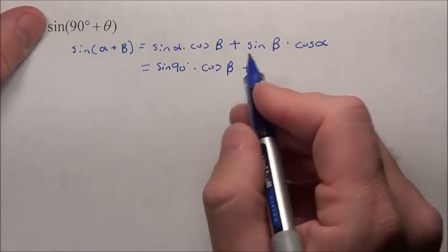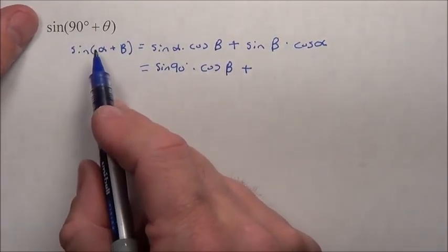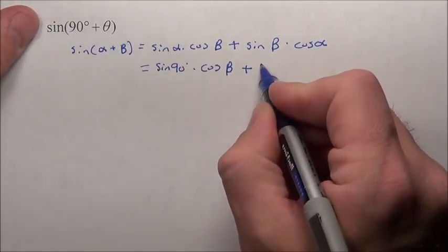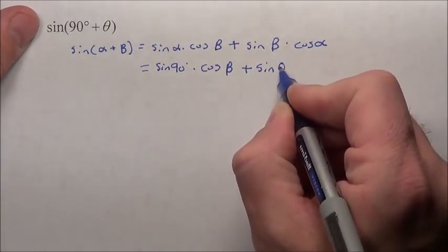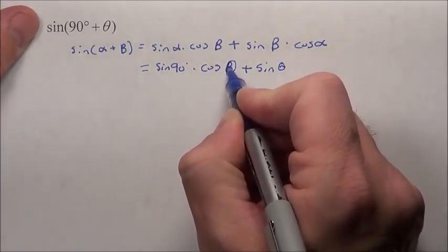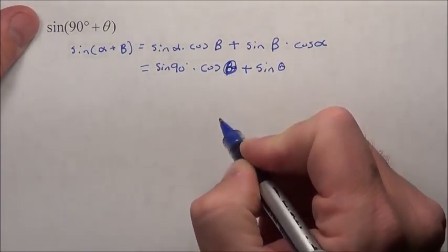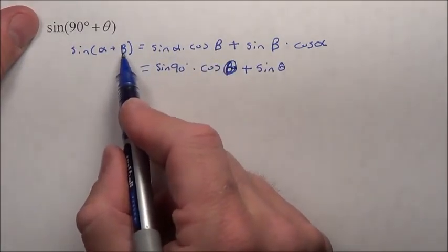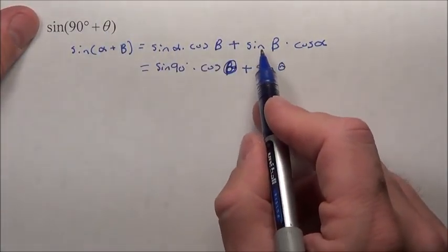Plus sine of beta, so the sine of this second piece, which is just sine of theta. I should have written that cosine of theta here. I apologize. Cosine of beta. Cosine of the second piece was the theta. Sine of beta.